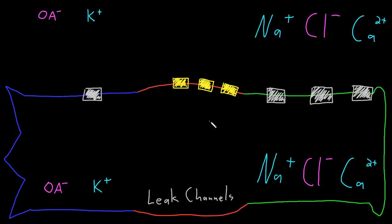Here I've drawn a blown-up neuron, with the soma in red, the axon in green, and one dendrite in blue. I've blown up the dendrite and the axon really large, just so I have some space to draw.